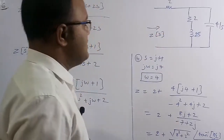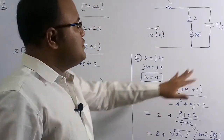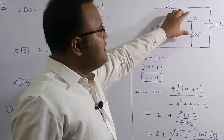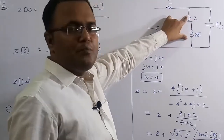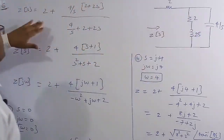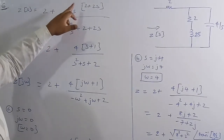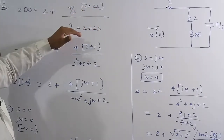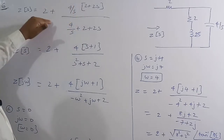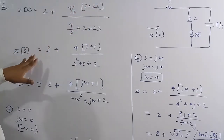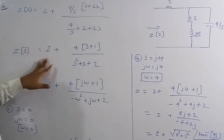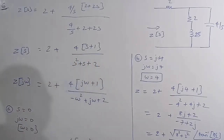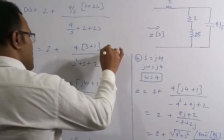We need to find the impedance. The 4/s capacitor is in parallel with the series combination of 2Ω and 2s inductor, and this parallel combination is in series with the 2Ω resistor. So Z = 2 + (4/s) ∥ (2 + 2s), which gives Z₁Z₂/(Z₁+Z₂). After simplification, Z(s) = 2 + 4(s+1)/(s²+s+2).